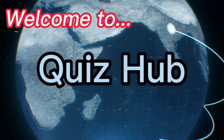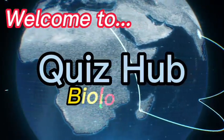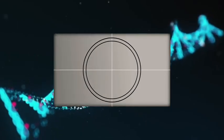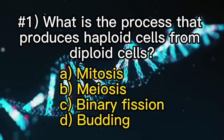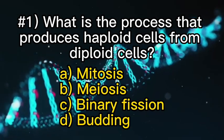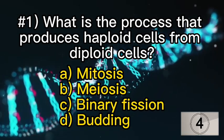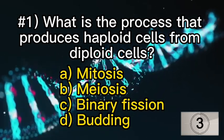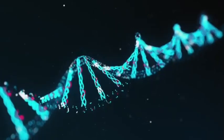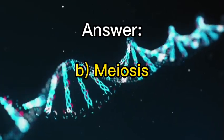Welcome to QuizHub. Number one: what is the process that produces haploid cells from diploid cells? B — meiosis.